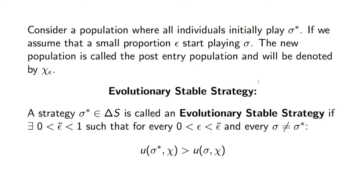If we introduced a very small proportion of another strategy into the population, what would happen? Would our population fly out of control, or not? An evolutionary stable strategy is a strategy such that if everyone is playing this evolutionary stable strategy and we introduce another strategy at a small enough number — so as long as we find this epsilon bar — then the utility is always better for our sigma star, which is the one tested for evolutionary stability, and sigma star is an evolutionary stable strategy.